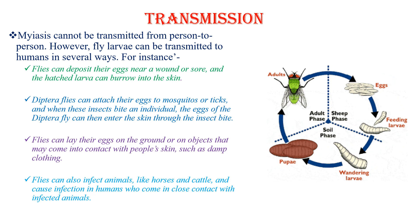Also, botflies can attach their eggs to mosquitoes or ticks, and when these insects bite an individual, the eggs can enter the skin through the insect bite. Flies can also lay their eggs on the ground or on objects that may contact people's skin, such as damp clothing. Flies can also infect animals and cause infection in humans who have close contact with infected animals.